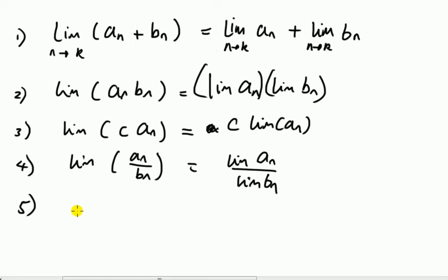Five, power. Let's say we have a limit of a_n to some kind of power, let's call it c, and I can take the limit inside. Now we've got to be careful of this one, remember this one. We'll see it in an example later on.